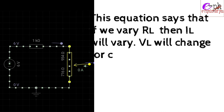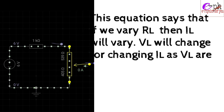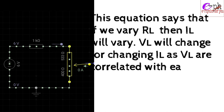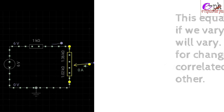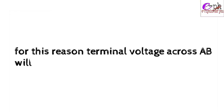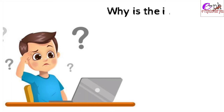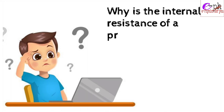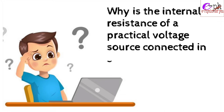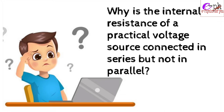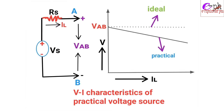This equation shows that if we vary R_L, then I_L will also vary and V_L will change accordingly, since I_L and V_L are correlated with each other. For this reason, the terminal voltage across AB will not be constant. Here a question comes to mind: why is the internal resistance of a practical voltage source connected in series but not in parallel?